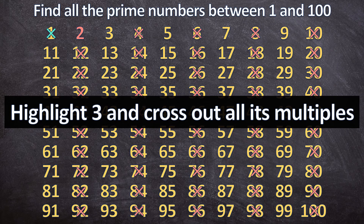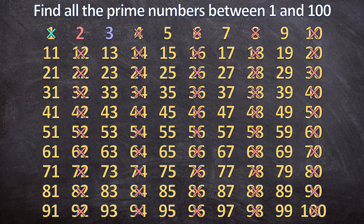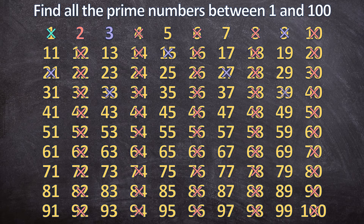Next, you highlight 3 and cross out all 3's multiples. So I highlight 3, and then I cross out the multiples. 6 is already crossed out because it's also a multiple of 2, so I move on. 9 gets crossed out. 12 is already crossed out as a multiple of 2. I carry on to 15 and continue until 99, which is the last multiple of 3.